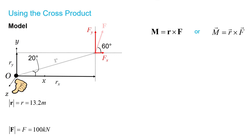So, in order to evaluate this cross product, we need to know vector R and vector F in vector notation. Now, luckily for us, we already calculated the Rx and Ry components in the previous calculation, the 12.4 and 4.51. And Rz has to be equal to zero because our vector R is contained completely in the xy plane.